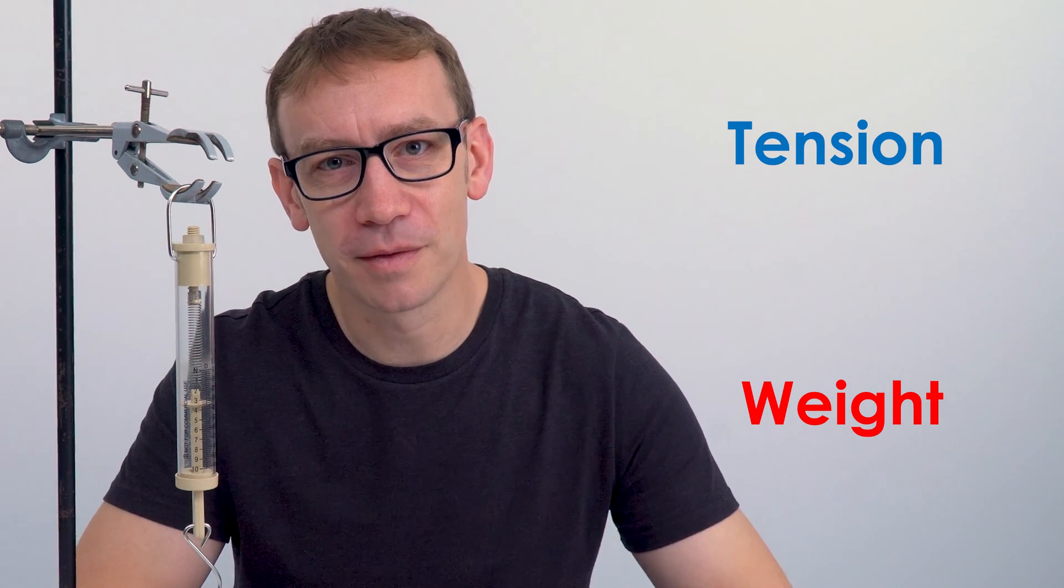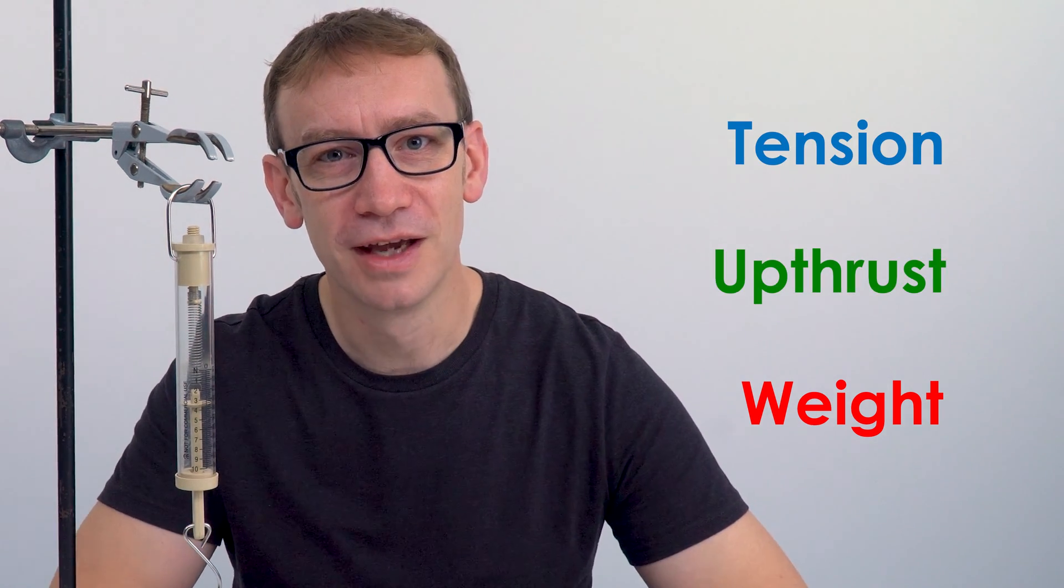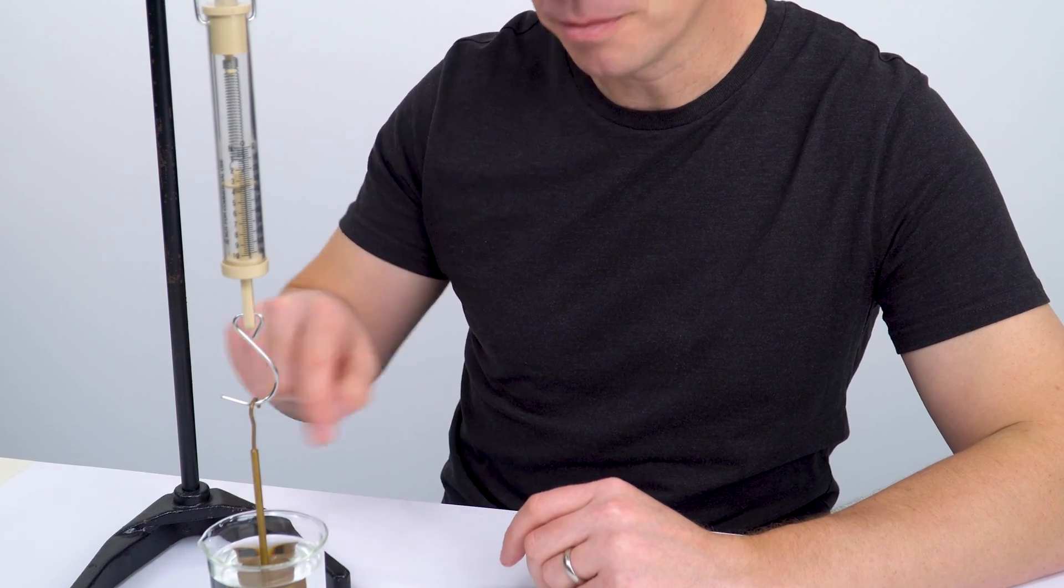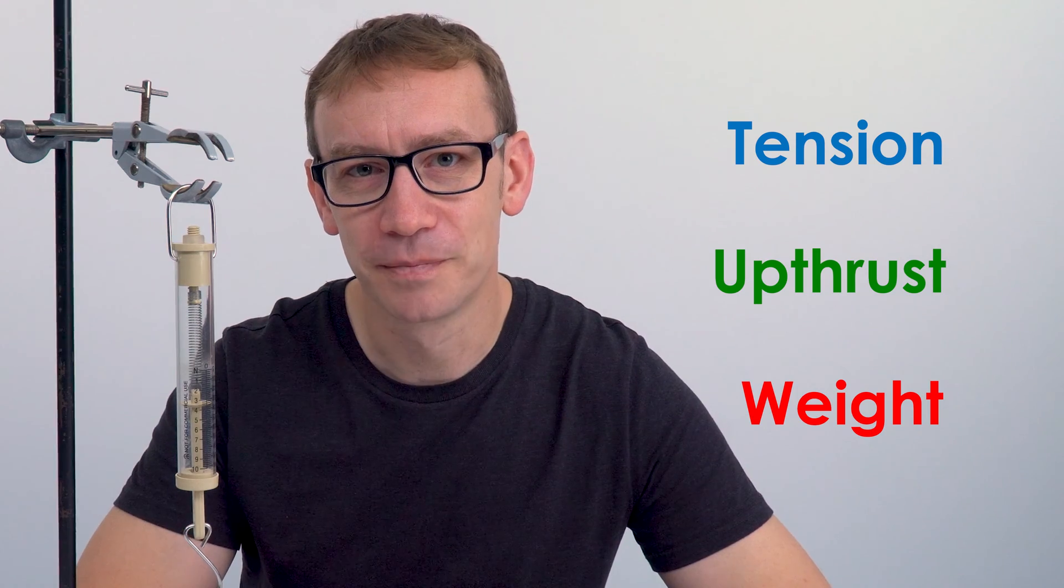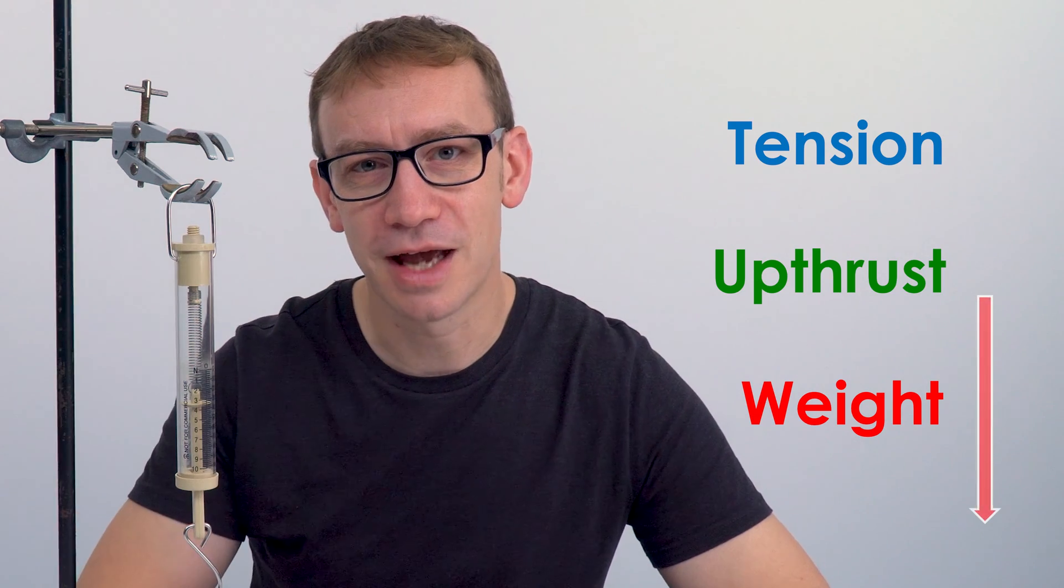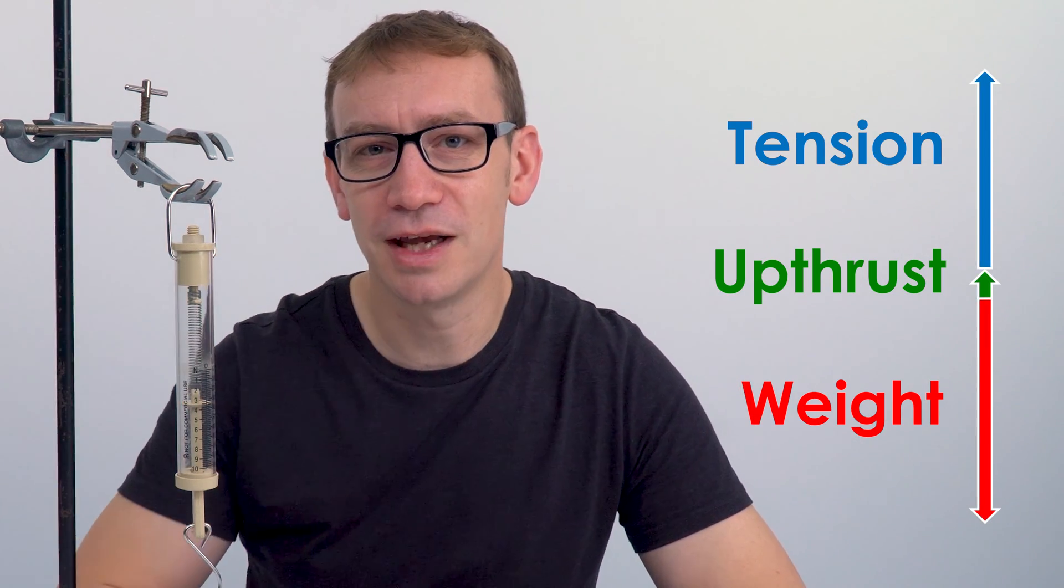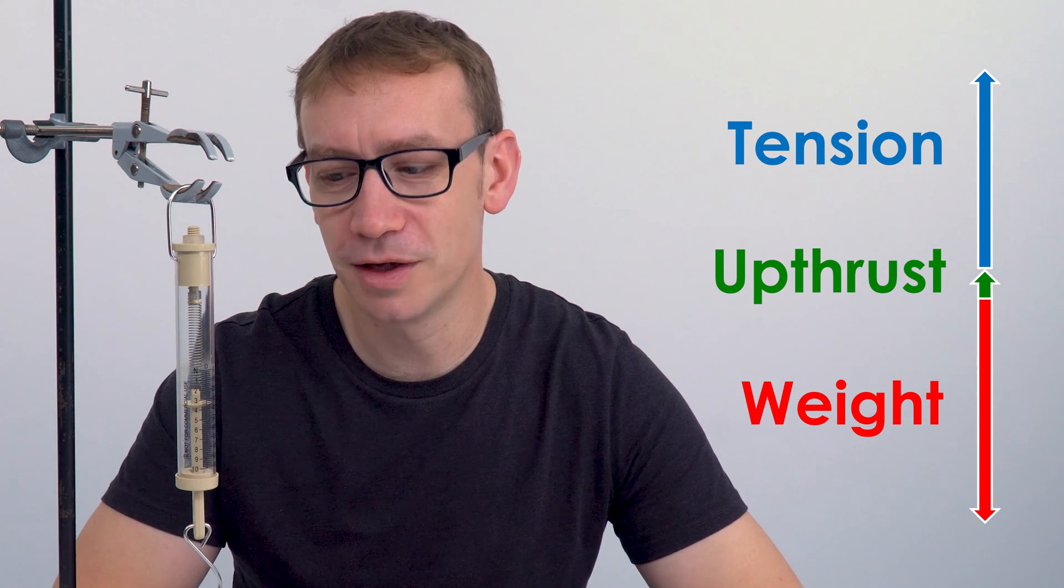there's also another force called upthrust, sometimes called buoyancy, and this is due to the volume of fluid which this mass has displaced in that water. So now although we've got the weight acting down we have an upthrust acting up and that means the tension in that spring is going to be smaller than it was before.